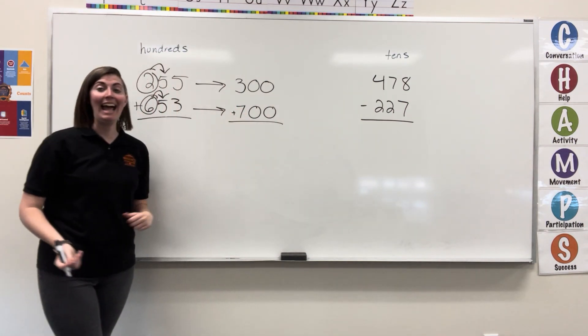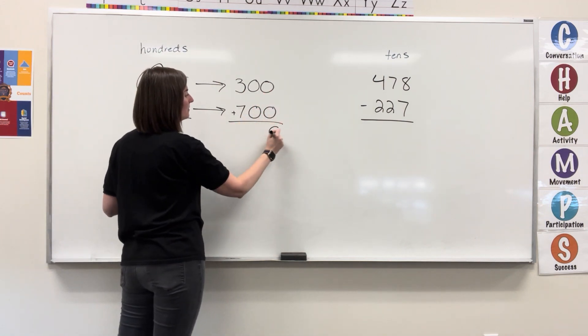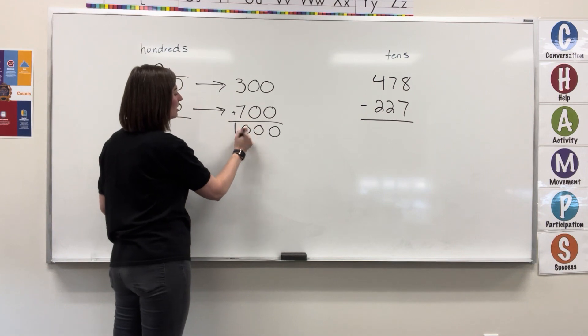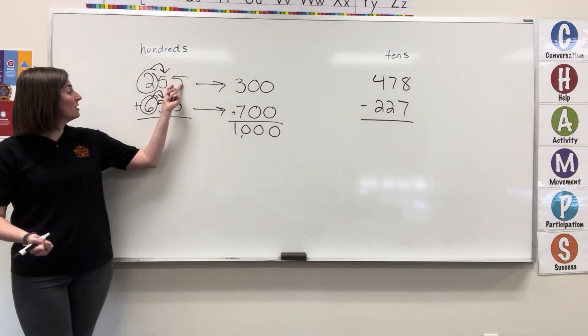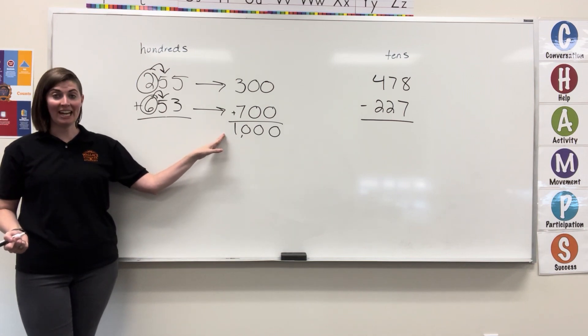Now, I can add my rounded numbers to get my estimate. Zero plus zero. Zero plus zero. Three plus seven. So, 255 plus 653 is about 1,000.